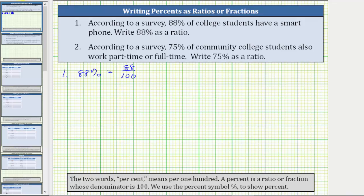We can also write ratios using a colon or the word two. As a colon, we have 88 colon 100, or using the word two, as a ratio, we have 88 to 100.